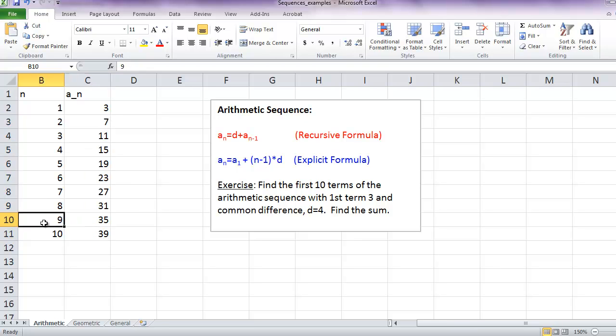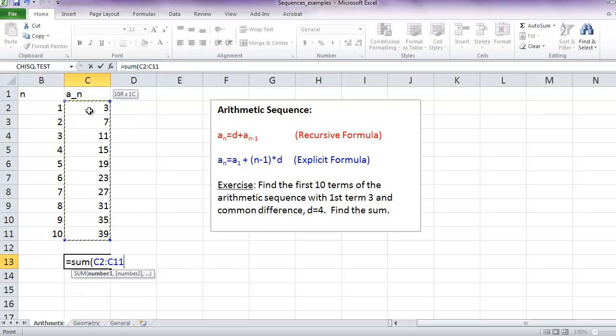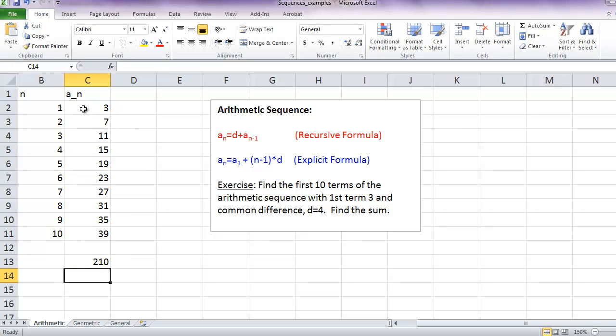We can see that the ninth term is 35 and the tenth term is 39. Now, to find the sum, we type in equals, sum, parentheses, highlight the cells we want to take the sum of, close parentheses, and enter.